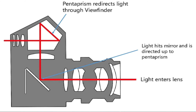The mirror reflects the light to the pentaprism available in front of the optical viewfinder, and this is how you're able to view an object from the optical viewfinder.